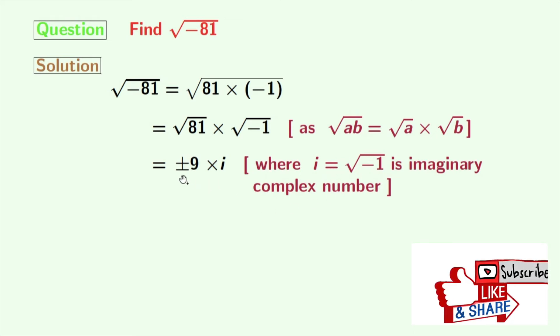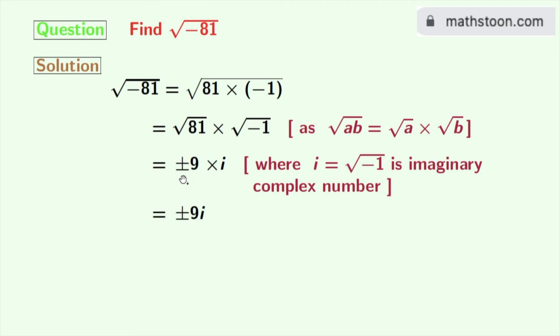Now after multiplying these two, we get plus minus 9i. So finally we get square root of minus 81 is equal to either 9i or minus 9i, and this is our final answer.